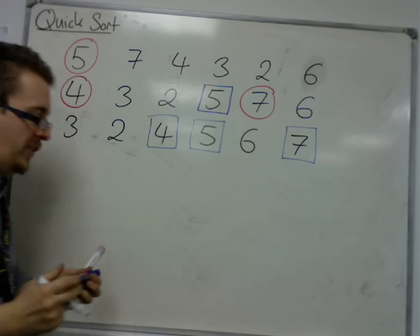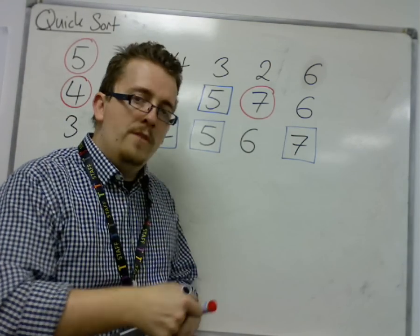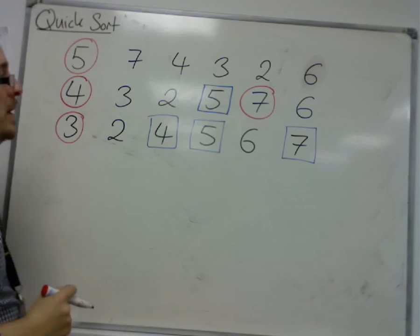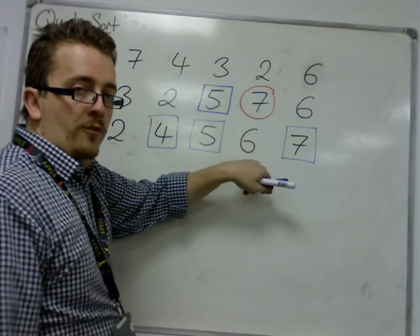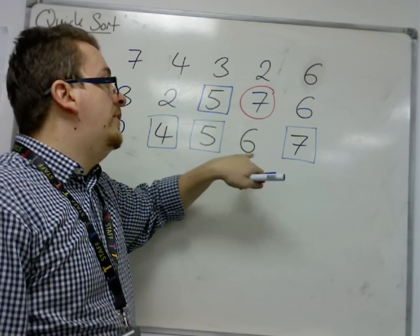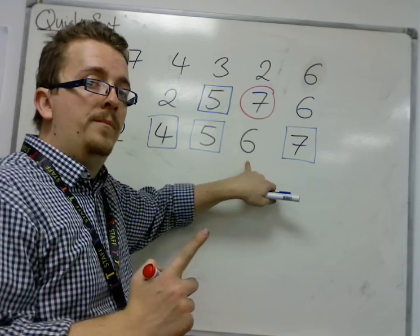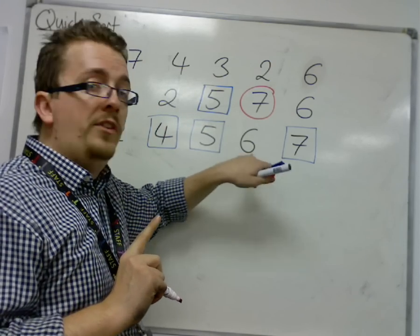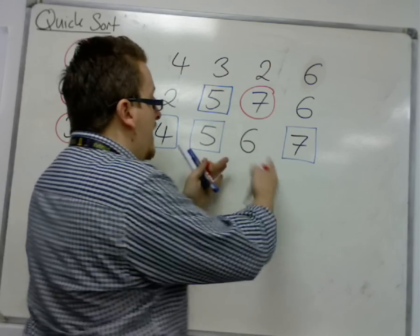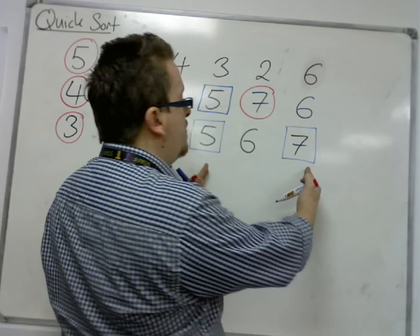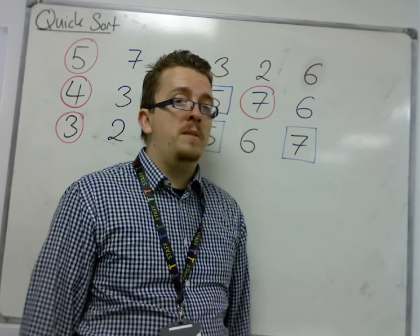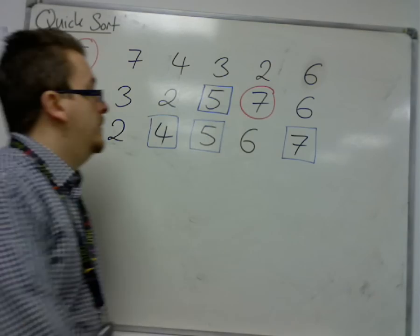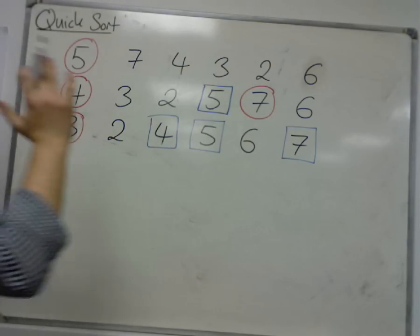We still have two sublists. However, in this sublist I can choose three to be my next pivot. However, for this number here, this is a sublist of just one number - there is nothing to compare it to, and so this is not chosen as a pivot. It is just stuck between two dead pivots with nothing to compare it with. It cannot be moved. It is done. It is fixed in place. Don't box it, don't underline it - it's there, it's done.